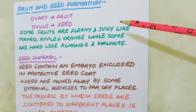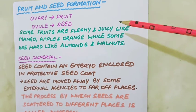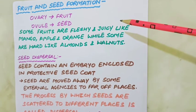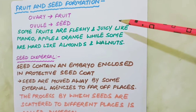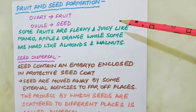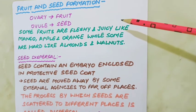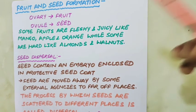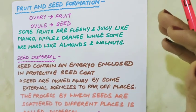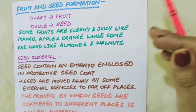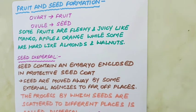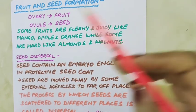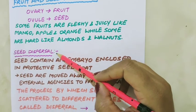If a large number of seeds fall in the same place, they will not get enough space, water, or light, and will not develop into healthy plants. Thus seeds are moved away by external agencies to far-off places. This process by which seeds are scattered to different places far and wide from their parent is called seed dispersal.